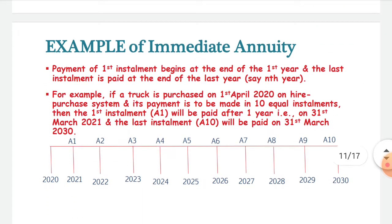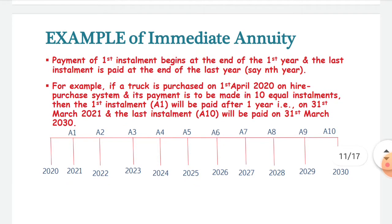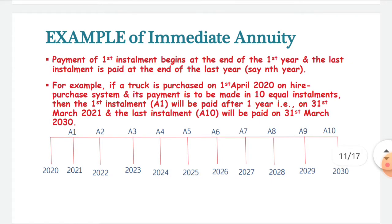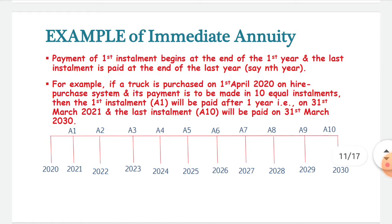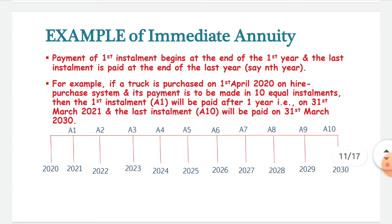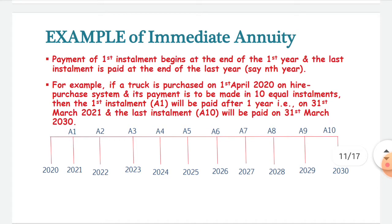For example, if a truck is purchased on 1st April 2020 on a hire purchase system, i.e. on a credit basis, and its payment is to be made in 10 equal installments, then the first payment will be paid one year after purchase, that is 31st March 2021. The second installment will be paid in 2022, the third in 2023, and so on up till the 10th installment, which is paid in 2030.